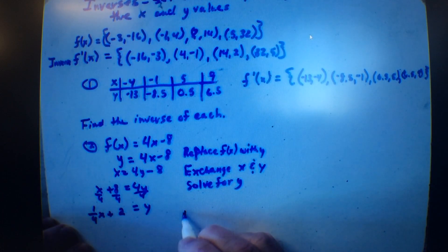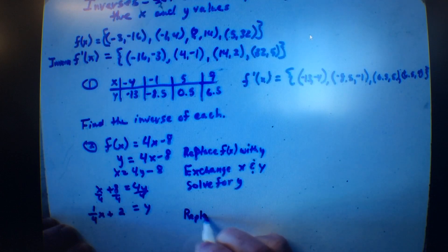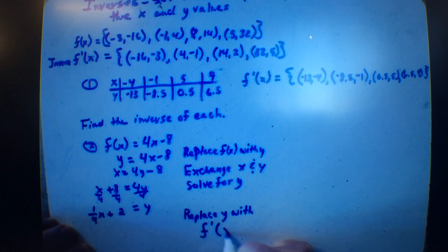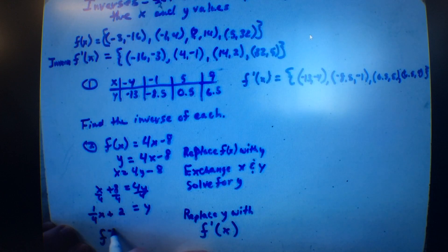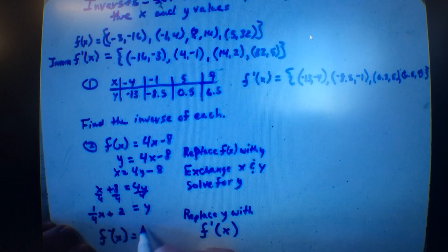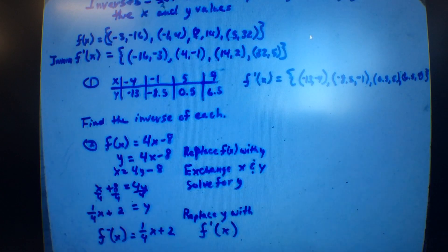Okay. So now I replace y with not f of x, but f prime of x. And I'm going to switch it around because I like it on this side. So f prime of x equals 1 4th x plus 2. Allie, do you understand that x over 4 is 1 4th x? Okay. Allie, why would we write it and why would we change it to 1 4th x? Why not just leave it as x over 4?